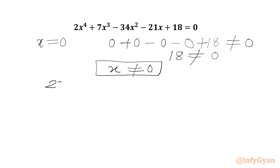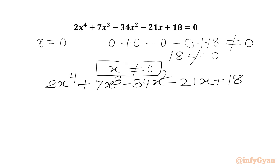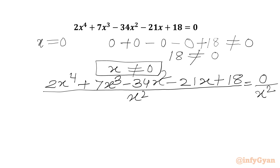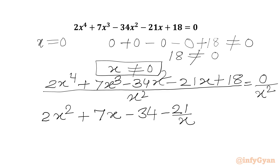Since x cannot be 0, I can divide our equation by x². Let us divide both sides by x². We get: 2x² + 7x - 34 - 21/x + 18/x² = 0.